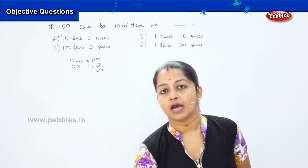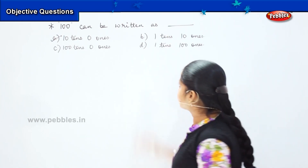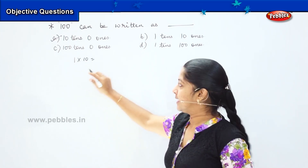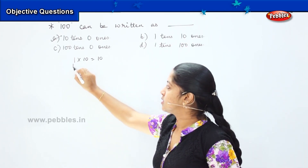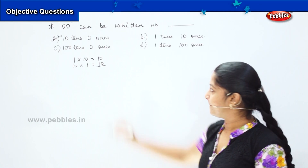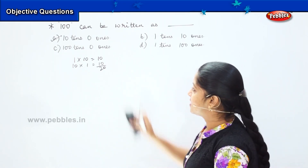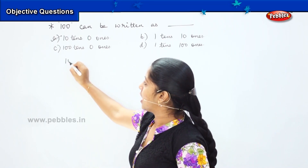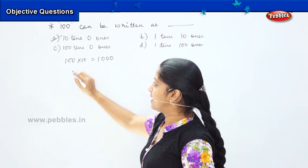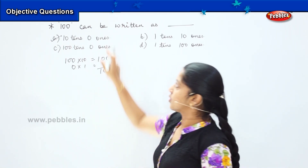Now we have the answer, but let me explain the other options as well. Option B says 1 ten and 10 ones: 1 into 10 is 10, and 10 into 1 is 10. Adding both gives 20, which is not 100. Option C says 100 tens: 100 into 10 is 1000. And 0 ones is 0. So the total is 1000, whereas the question asks for 100.